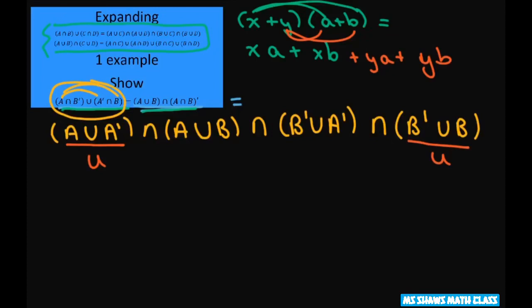So this gives you A or B and A or B and B prime or A prime and the universal set.